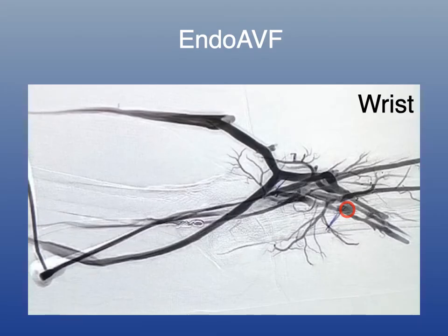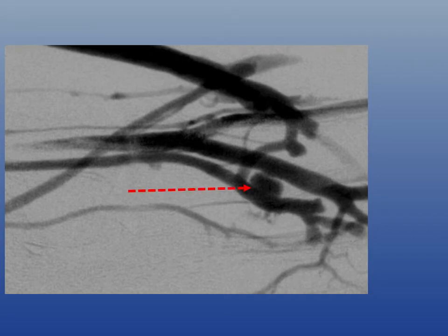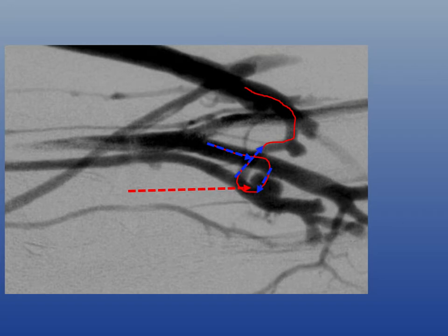Here's the fistula. Blood drains via bridging veins and a dominant perforator, ultimately into a median cubital vein and out the cephalic and basilic veins in this case. Following the blue arrows: blood comes down via the common ulnar artery, out the fistula, refluxes through a perforator vein, and ultimately into a median cubital vein giving dual outflow — consisting of both cephalic and basilic veins.